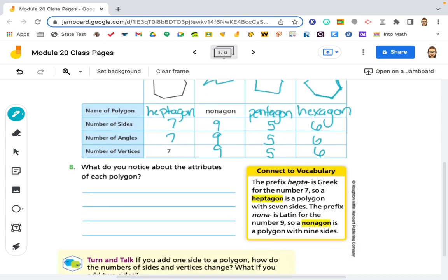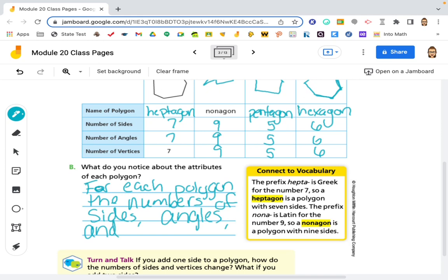So what do you notice about the attributes of each polygon? Well, for each polygon, the numbers of sides, angles, and vertices are the same.